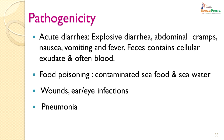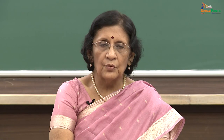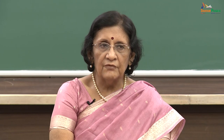Vibrio parahaemolyticus causes diarrhoea — it is one of the diarrhoeogenic Vibrios. It causes explosive diarrhoea with abdominal cramps, nausea, vomiting and fever. So it is essentially an inflammatory diarrhoea, unlike Vibrio cholerae which causes only toxigenic diarrhoea. The faeces contains cellular exudate and often blood — in the stool of a patient with Vibrio cholerae, you will never see cellular exudates or blood. It can also present as food poisoning because it contaminates seafood and sea water. Other infections include wound infections, ear and eye infections and pneumonia.